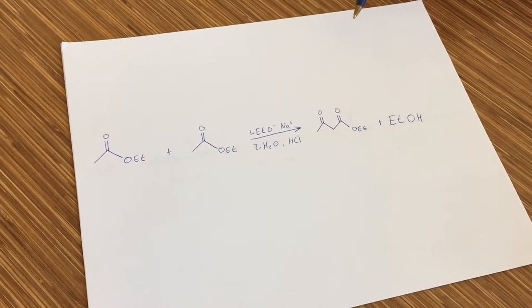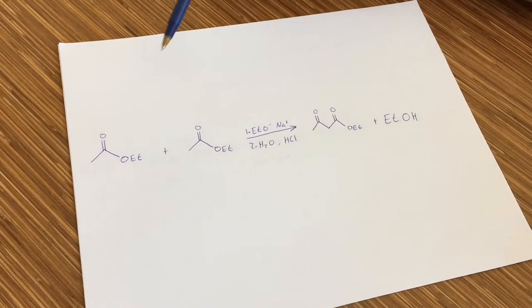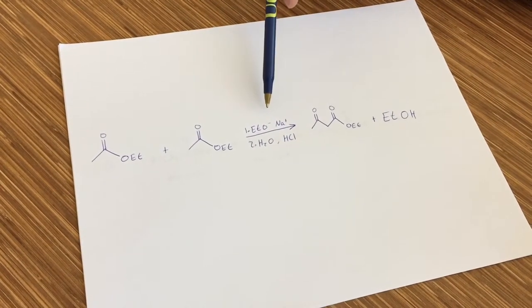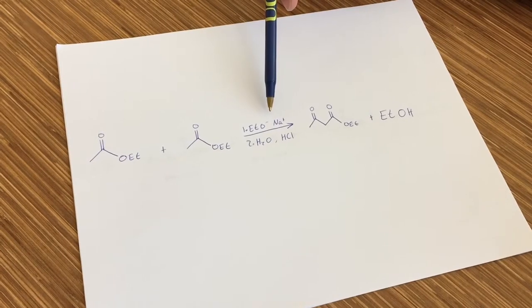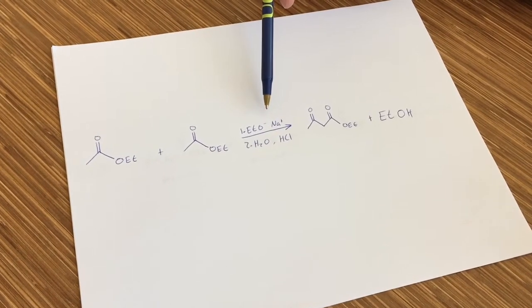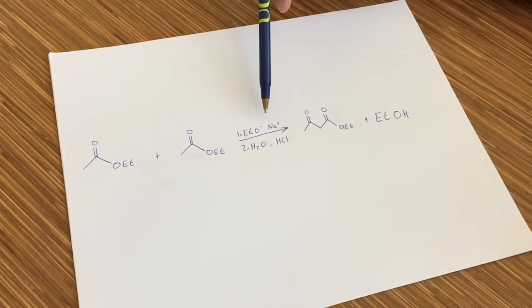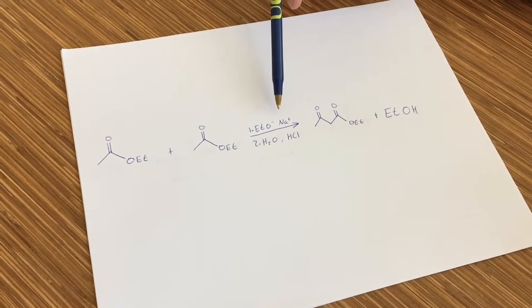The Claisen condensation occurs when two esters form a beta-ketoester in basic solution. It is important that the base used should be the same alkoxide ion as the leaving group. This prevents transesterification, which would occur if you use a different alkoxide ion.